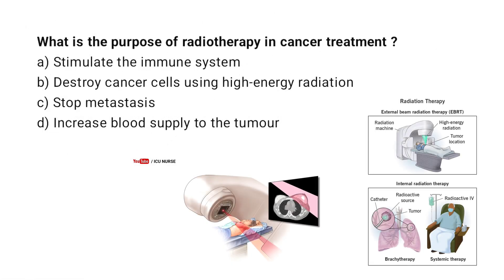What is the purpose of radiotherapy in cancer treatment? A. Stimulate the immune system. B. Destroy cancer cells using high energy radiation. C. Stop metastasis. D. Increase blood supply to the tumor. Correct answer: B. Destroy cancer cells using high energy radiation. Radiotherapy uses targeted radiation to kill cancer cells while minimizing damage to surrounding healthy tissue.